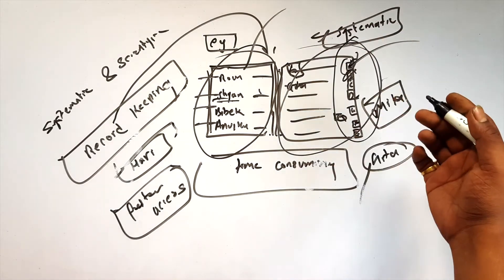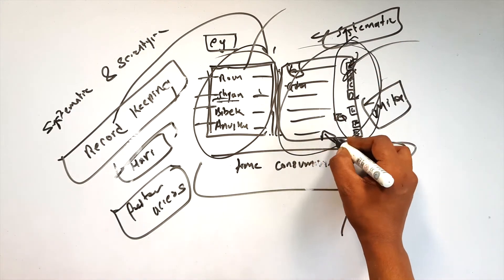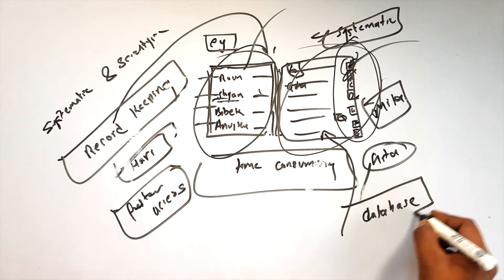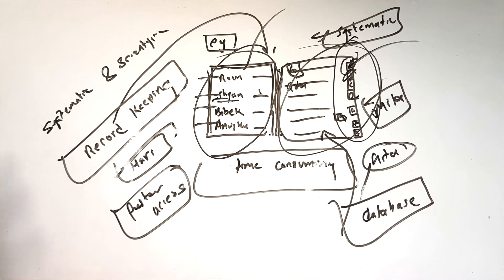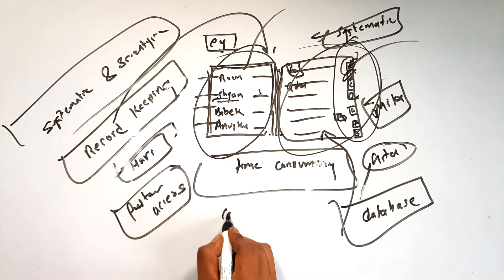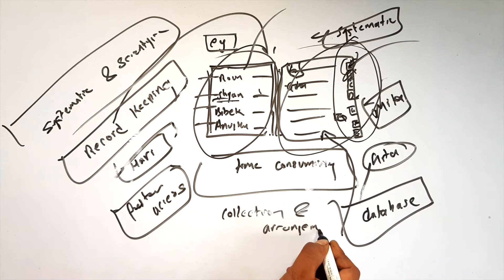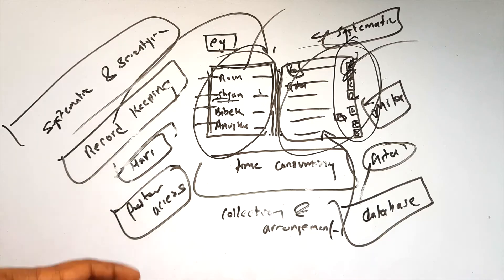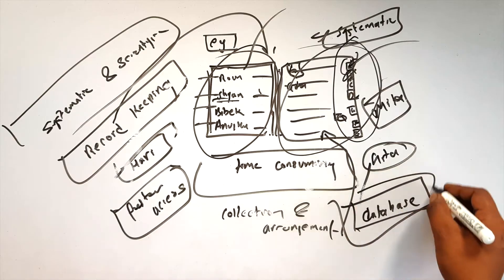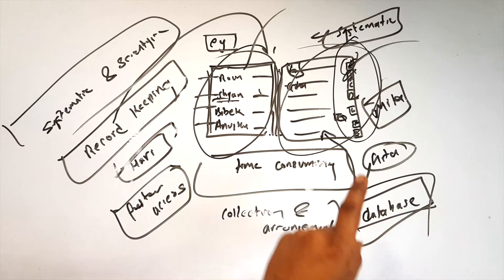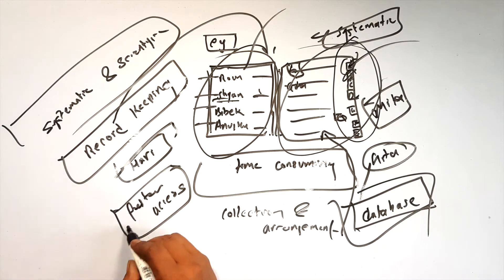So the process of storing data systematically is called a database. Here is the definition: a database is the systematic and scientific collection and arrangement of data. It is used for faster access of data.